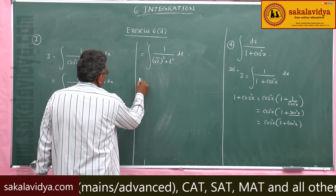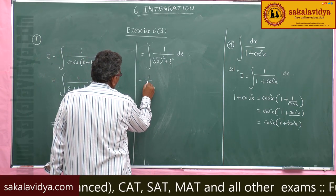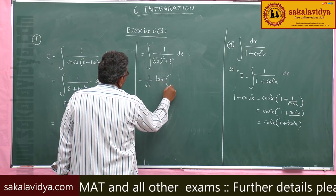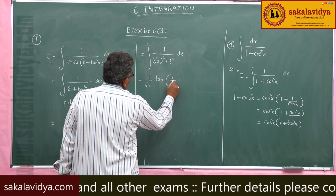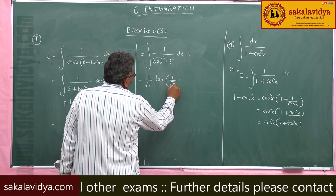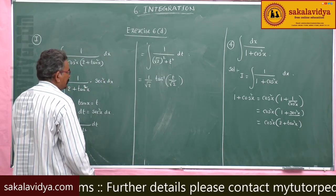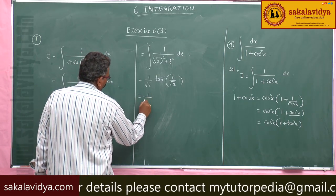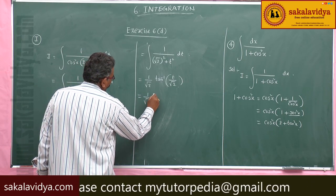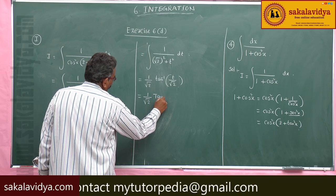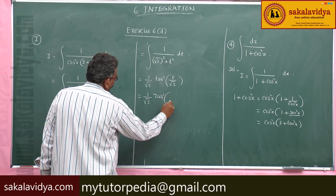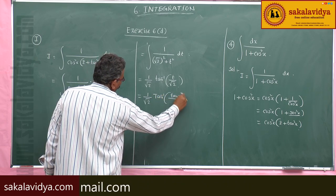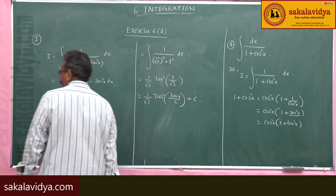So the result is 1 by root 2 tan inverse t by root 2, where t stands for tan x. Therefore I equals 1 by root 2 tan inverse of tan x by root 2 plus constant of integration.